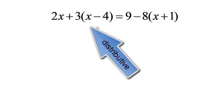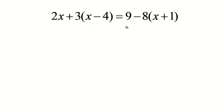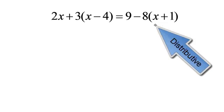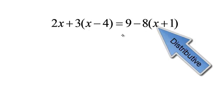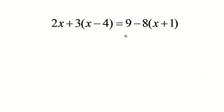That is distributive property. On the right side, I see 9. Now, that's not 9 minus 8. That's 9 minus 8 times x plus 1. I see distributive property again. So let's simplify each side first.